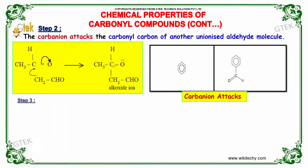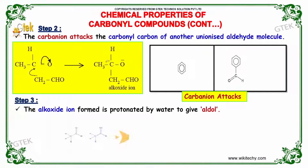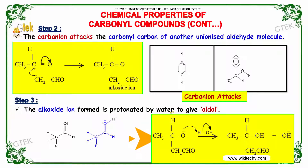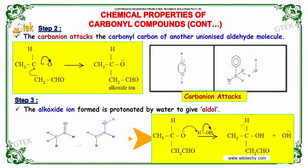Step 2: The carbanion attacks the carbonyl carbon of another unionized aldehyde molecule. Step 3: The alkoxide ion formed is protonated by water to give the aldol product. This is the alkoxide ion, and when it is made to react with water it produces the aldol.